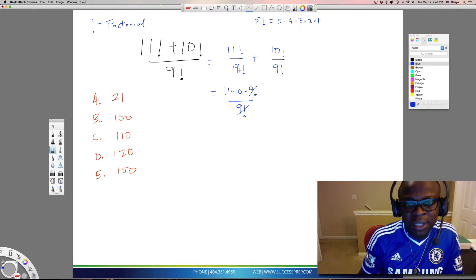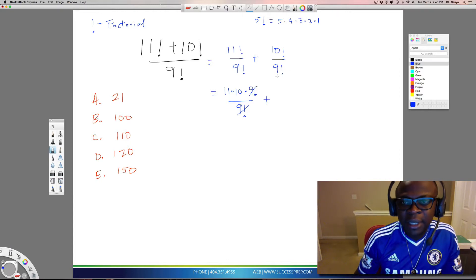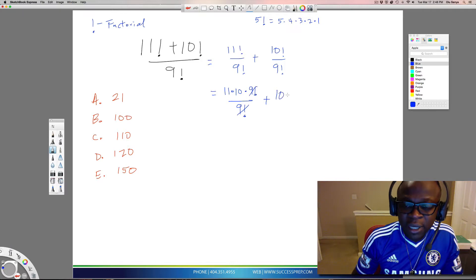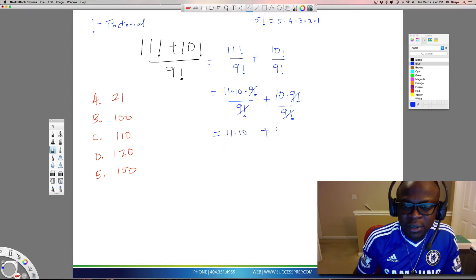In this case, let's think about the 10. This one is even easier because you just have to go one step: 10 times 9 factorial. You only put the factorial at the point where you hit the number that's the same as the highest one at the bottom, which is 9 factorial. This will cross out as well, so you're left with 11 times 10 plus 10.